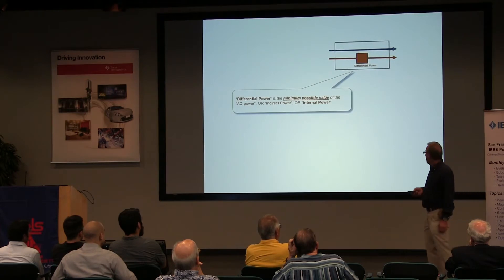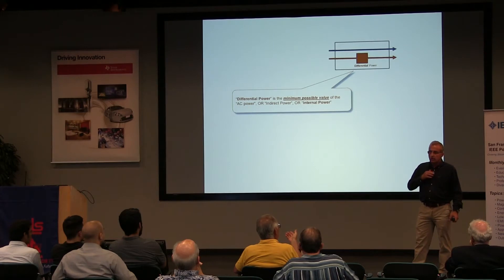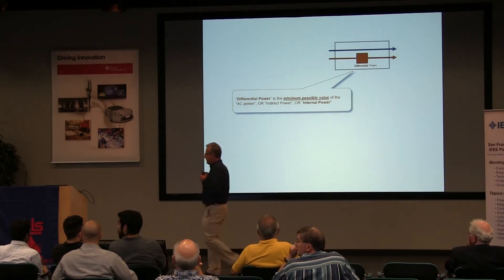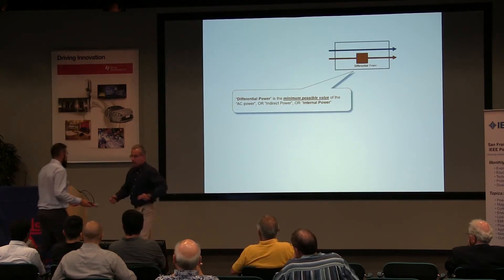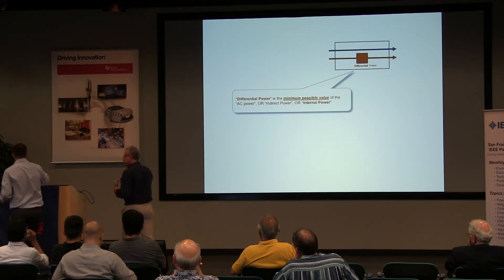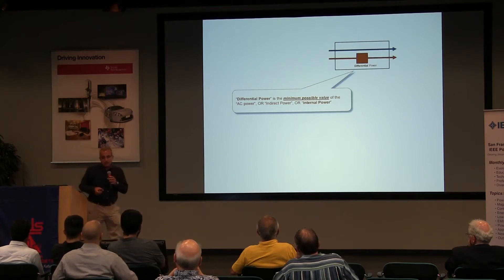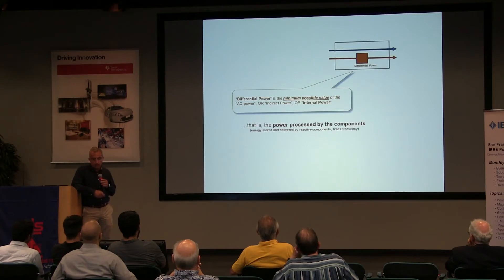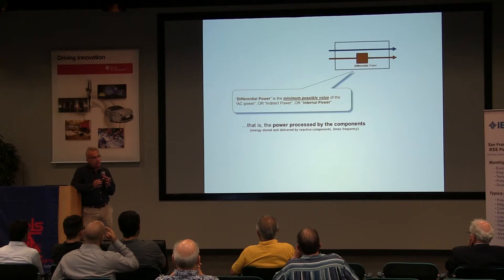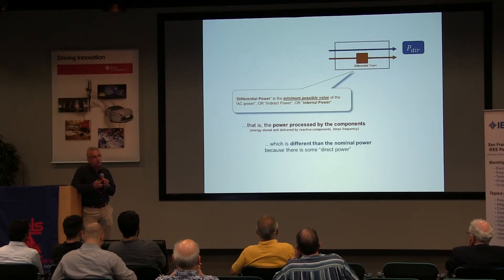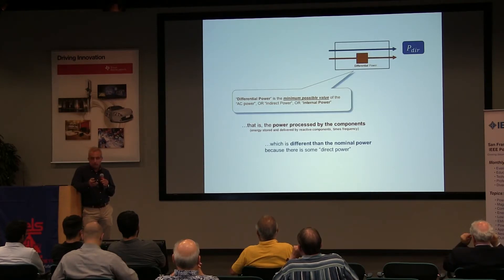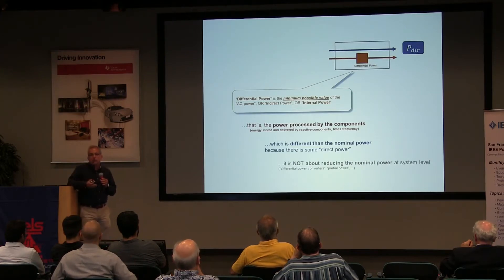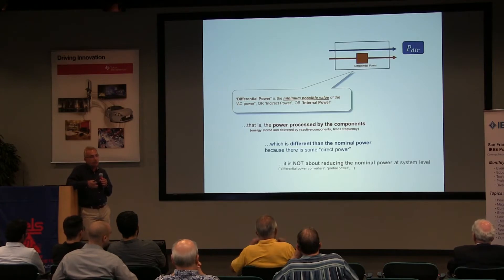What we are calling the difference of power — the differential power — is the minimum possible value of what some people call the AC power, or the indirect power, or what we call the internal power of the converter. It is basically the power that is processed by the components of your converter, and that is not the same as the nominal power. There is some direct power that flows from the source to the load without causing any losses or volume in your converter.